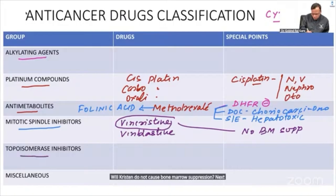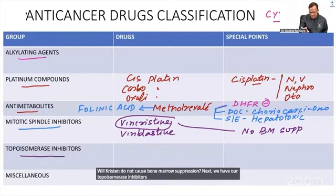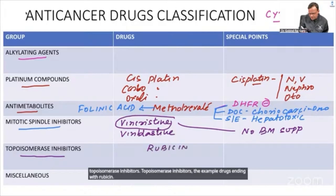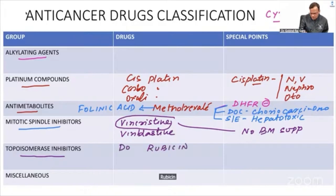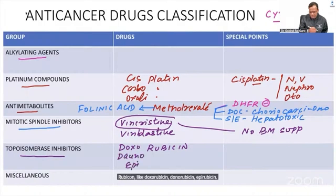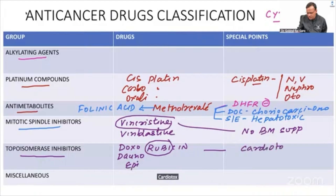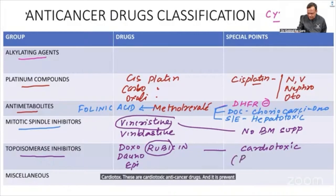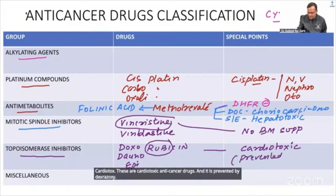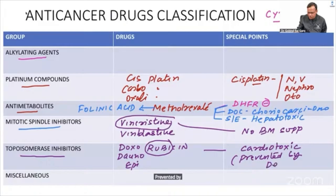Topoisomerase inhibitors are drugs ending in '-rubicin,' such as doxorubicin, daunorubicin, and epirubicin. The key side effect of rubicins is cardiotoxicity. This cardiotoxicity is prevented by dexrazoxane.